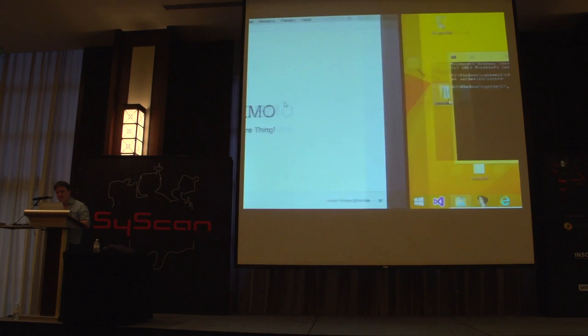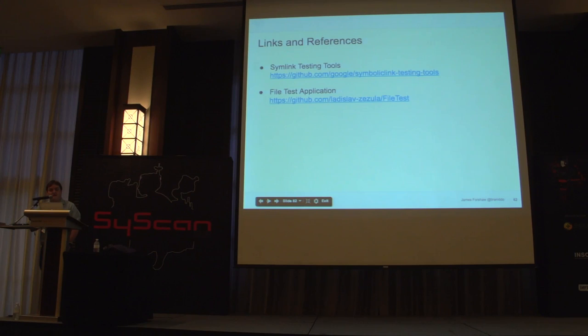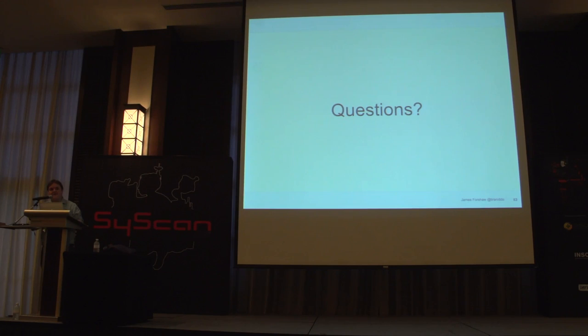I said I'd open source these symbolic link tools — you can download them from the link provided. Open source, Apache license, all that sort of stuff. There's also a file tool — a little graphical tool — you can download that is useful for playing with interesting file APIs without having to rewrite code every time. Thanks very much; if there are any questions catch me for a beer later.